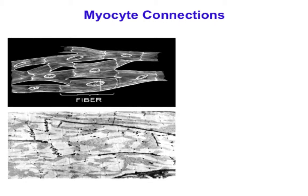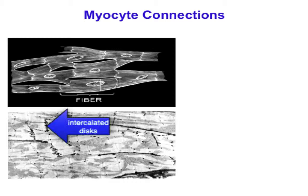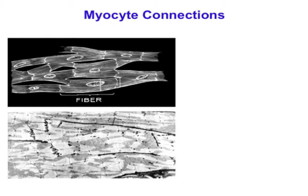They function like elongated fibers because they are arranged largely end-to-end in a locally parallel arrangement, and they are coupled tightly electrically and mechanically at junctions called intercalated disks. You can see the intercalated disks localized in this electron micrograph at the bottom. The cartoon at the top implies empty spaces between adjacent cells, which you can't really see in the electron micrograph.